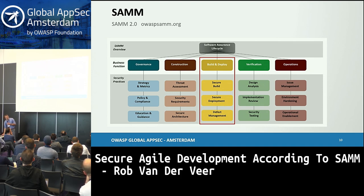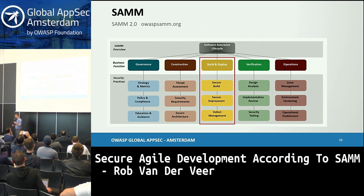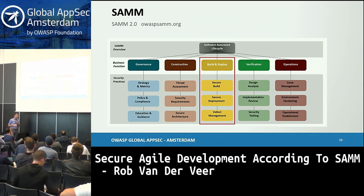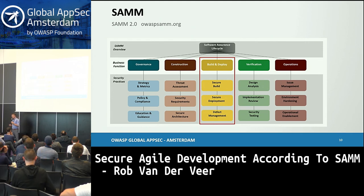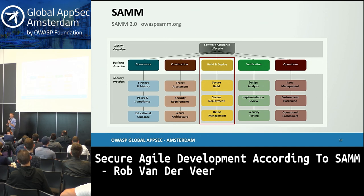SAM is a flagship OWASP project. It describes activities according to business functions and describes maturity — you can start really easy with every activity and build from there. The thing with SAM is it's process agnostic. It doesn't describe how you apply it in Agile, or in Kanban, or in Waterfall, because it wants to provide a generic model and talk about the activities.